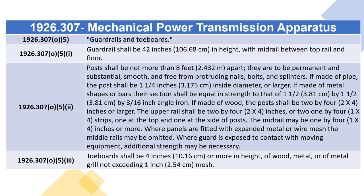If posts are made of pipe, they shall be one and a quarter inches (3.175 cm) inside diameter or larger. If made of metal shapes or bars, their section shall be equal in strength to one and a half by one and a half inch by 3/16 inch angle iron. If made of wood, posts shall be two by four inches or larger. The upper rail shall be two by four inches or two one-by-four strips. The mid-rail may be one by four inches or more. Where panels are fitted with expanded metal or wire mesh, the middle rails may be omitted. 1926.307(m)(5)(iii): Toe boards shall be four inches (10.16 cm) or more in height, of wood, metal, or metal grill not exceeding one inch (2.54 cm) mesh.